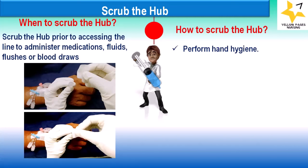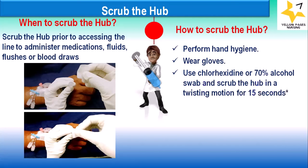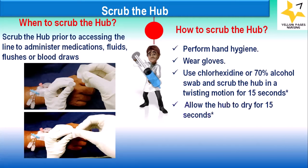To perform scrub the hub: perform hand hygiene, wear gloves, use chlorhexidine or 70% alcohol swab, and scrub the hub in a twisting motion for 15 seconds. Allow the hub to dry for 15 seconds — total 30 seconds — after which the hub can be accessed with sterile devices for infusing medication or drawing blood.